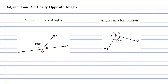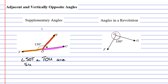We will now move on to what are called supplementary angles, by looking at the diagram on the left. Once again, we have two adjacent angles: angle SOT and angle TOU. These angles are supplementary. Angle SOT and angle TOU are supplementary.